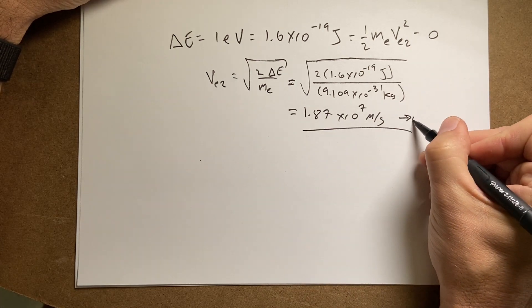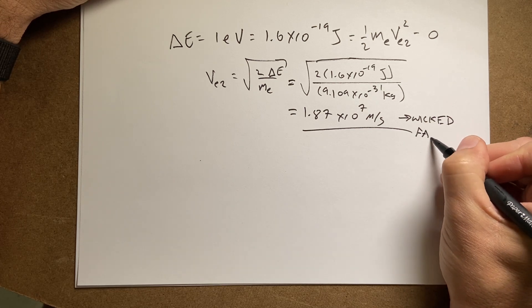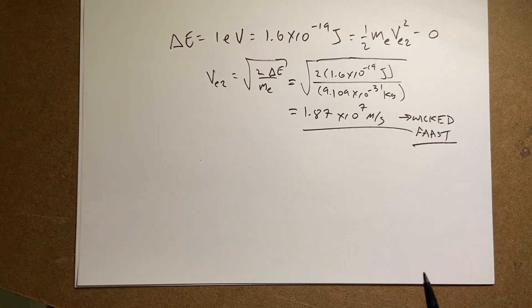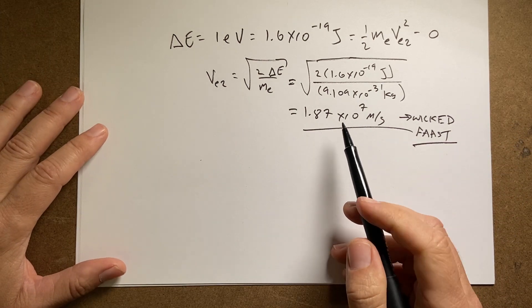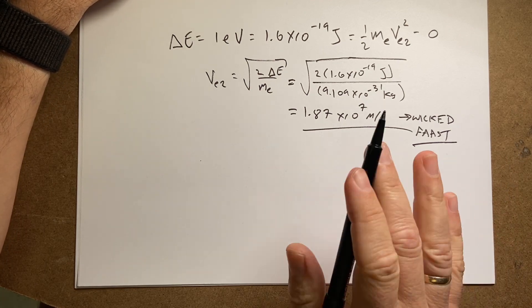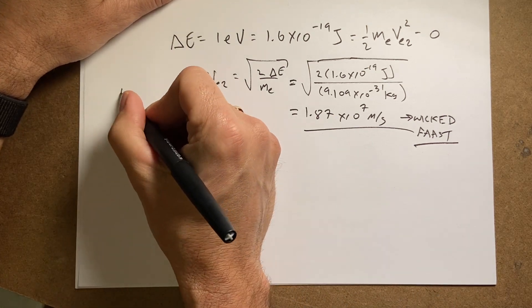I get 1.87 times 10 to the seventh meters per second, which is wicked fast. And I'm going to spell it two ways, wicked fast. Okay, and so you may be thinking, wait, isn't that too close to the speed of light? I mean, it is near the speed of light, but it's not above it, and I think it's fine to leave it like this. If you want to get a better answer, you'd have to do something else. That's the electron.